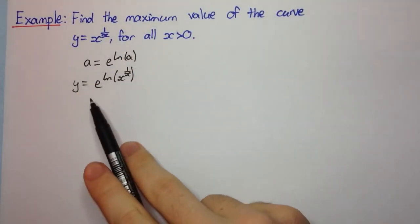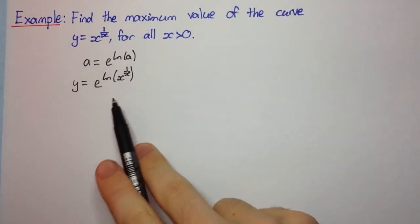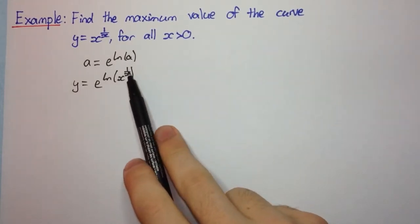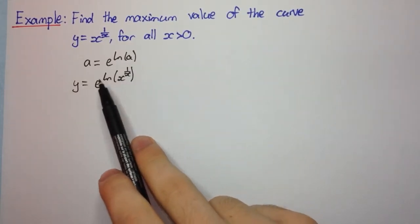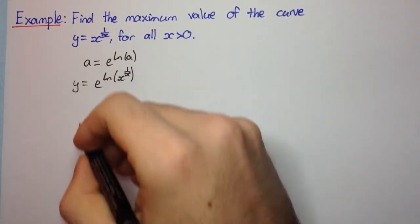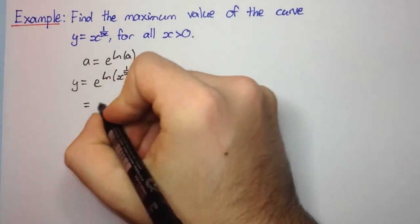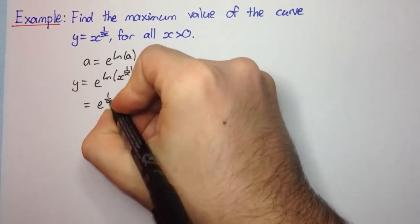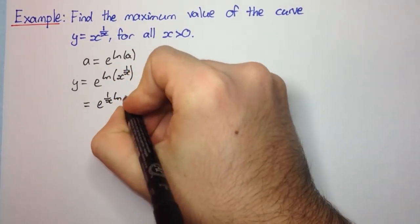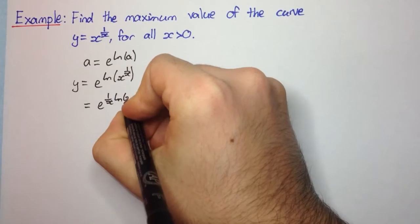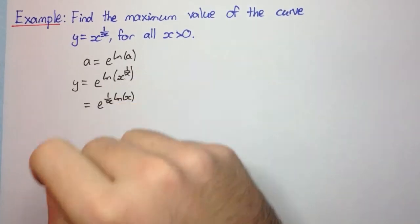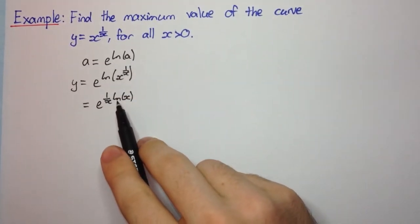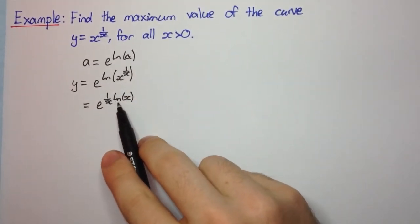Now, the reason we do this is because we know a property of logs: this power here can come down as the coefficient of the log. So we bring it down, and now we have e to the power of some function of x that we're able to differentiate.